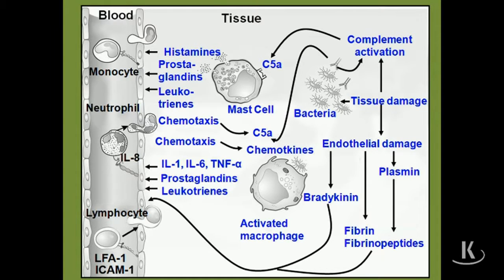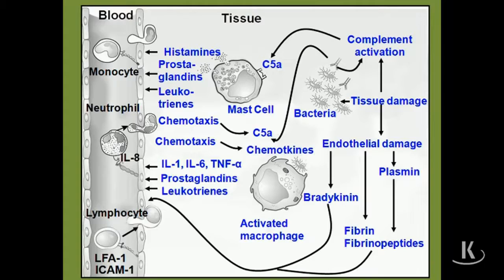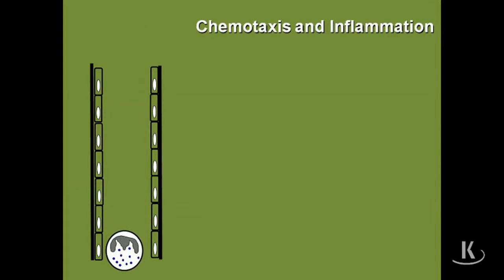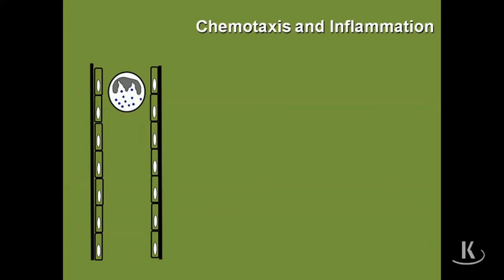So what I want to do — you can use this slide as a reference, but I'm going to move to the animated slide so we can do things in a more linear fashion. Same schematic: blood vessel to the left, tissue to the right. During normal blood flow, you're going to have your white and red cells moving through that vasculature very nicely.